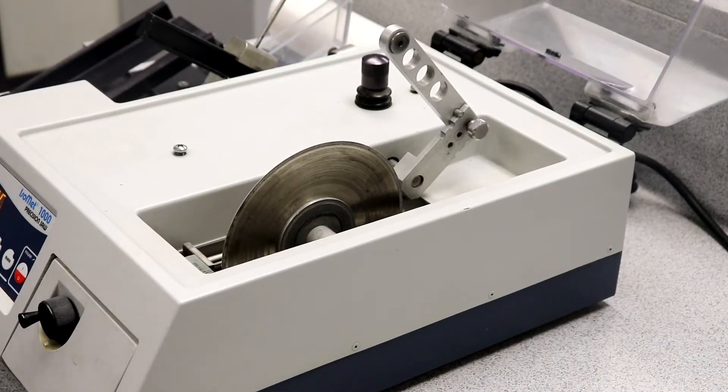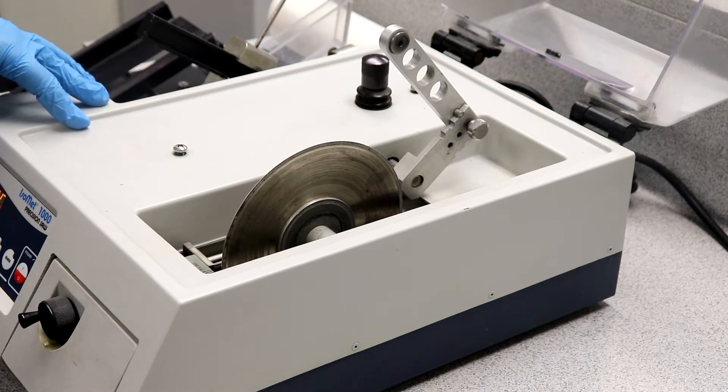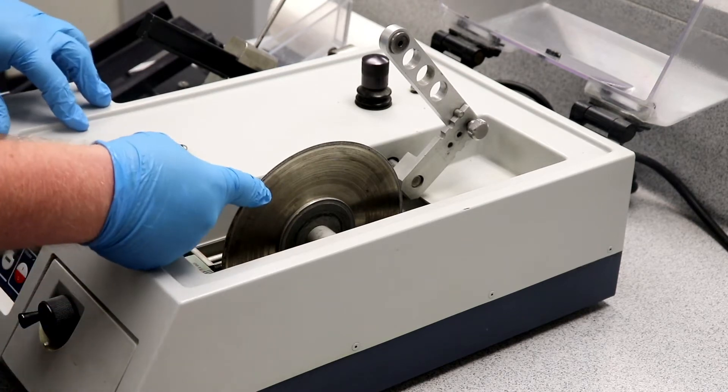So today we're going to learn how to use the table saw attachment with the IceMint 1000. First, we already have our blade on, this is good.